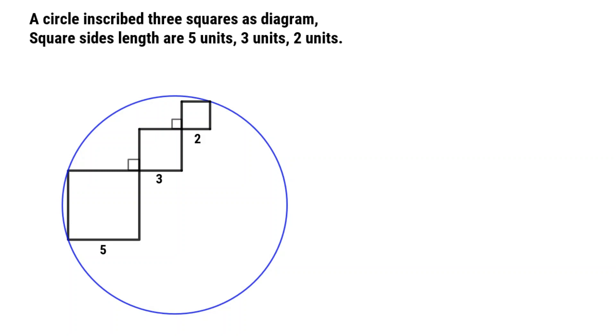A circle inscribed three squares as diagram. Square sides are 5 units, 3 units, 2 units.